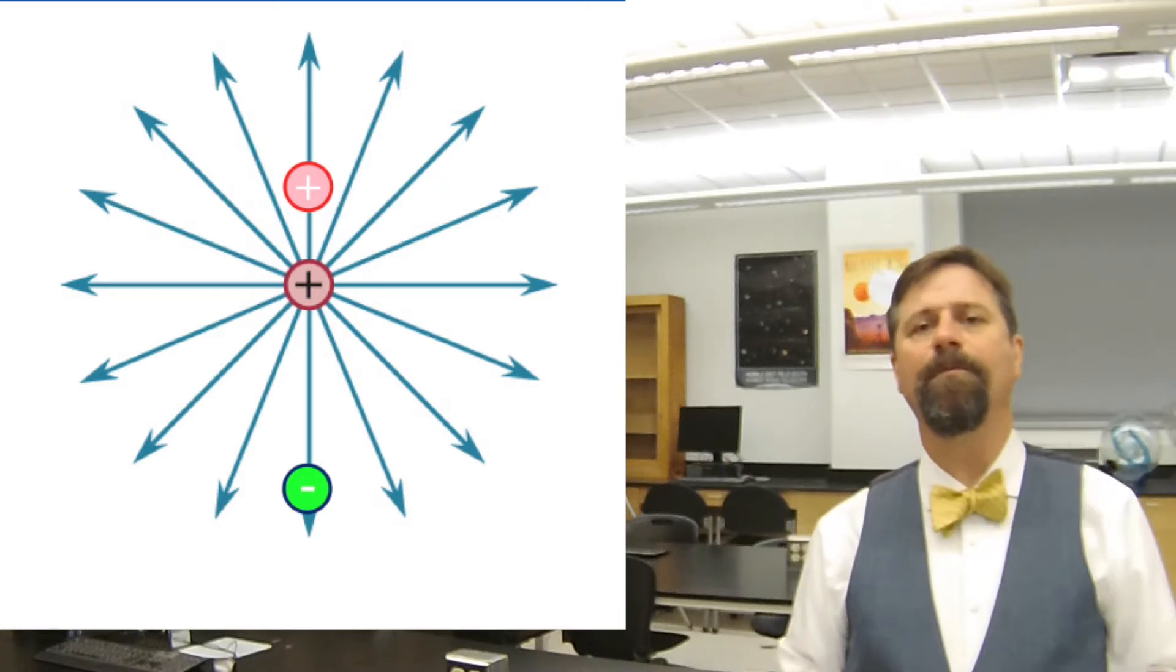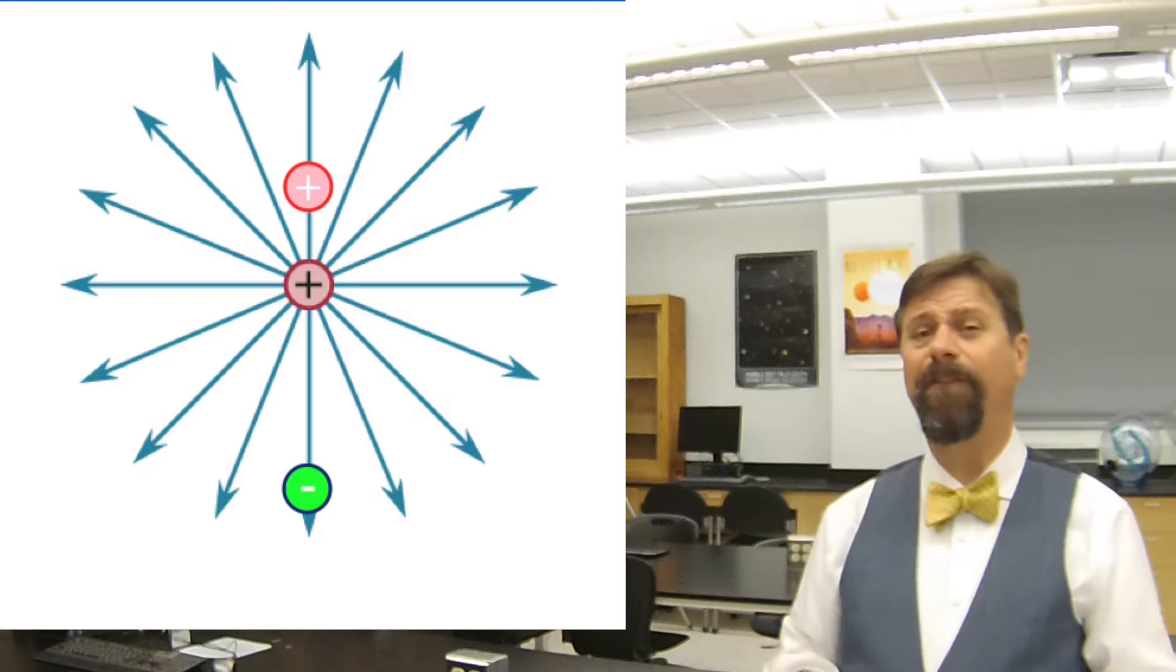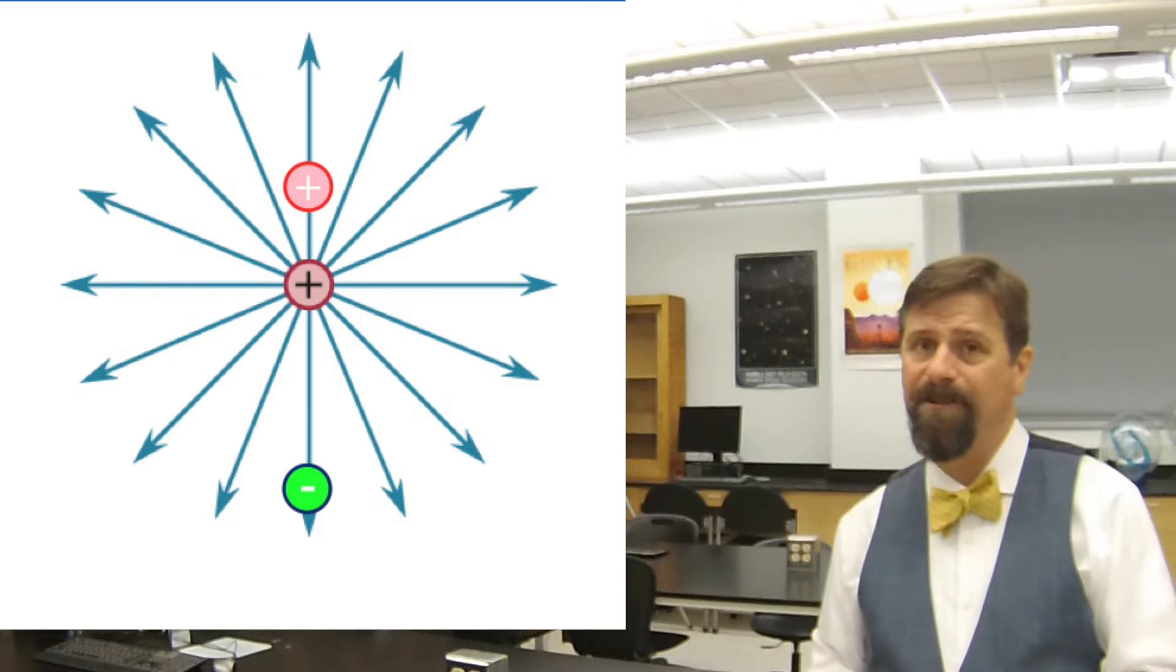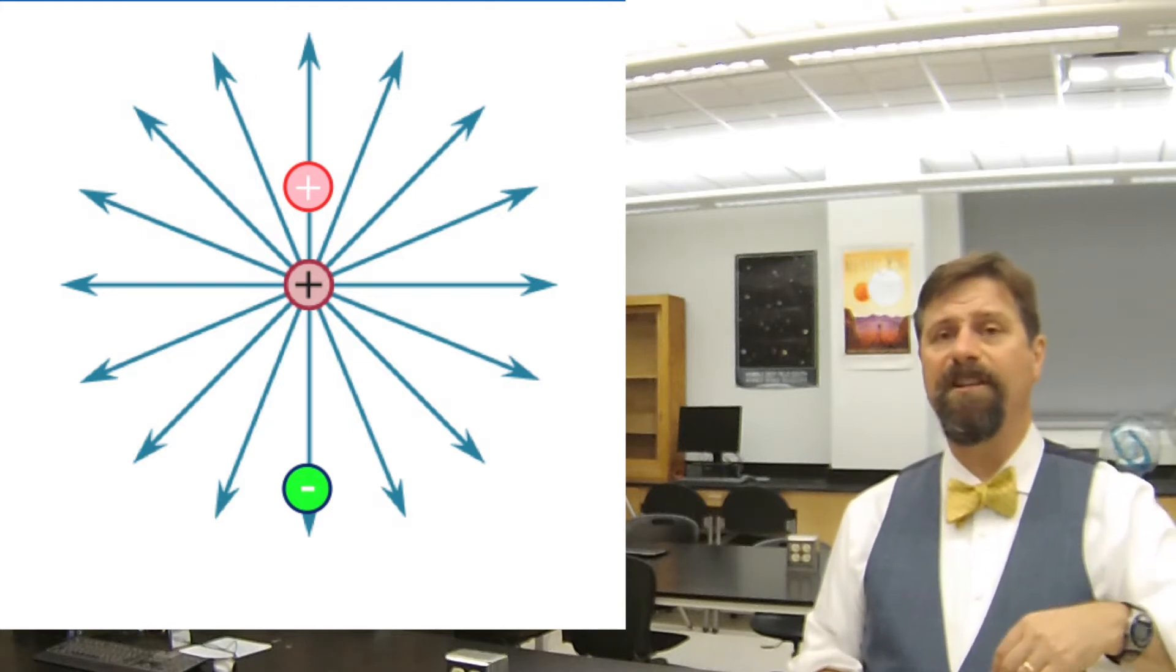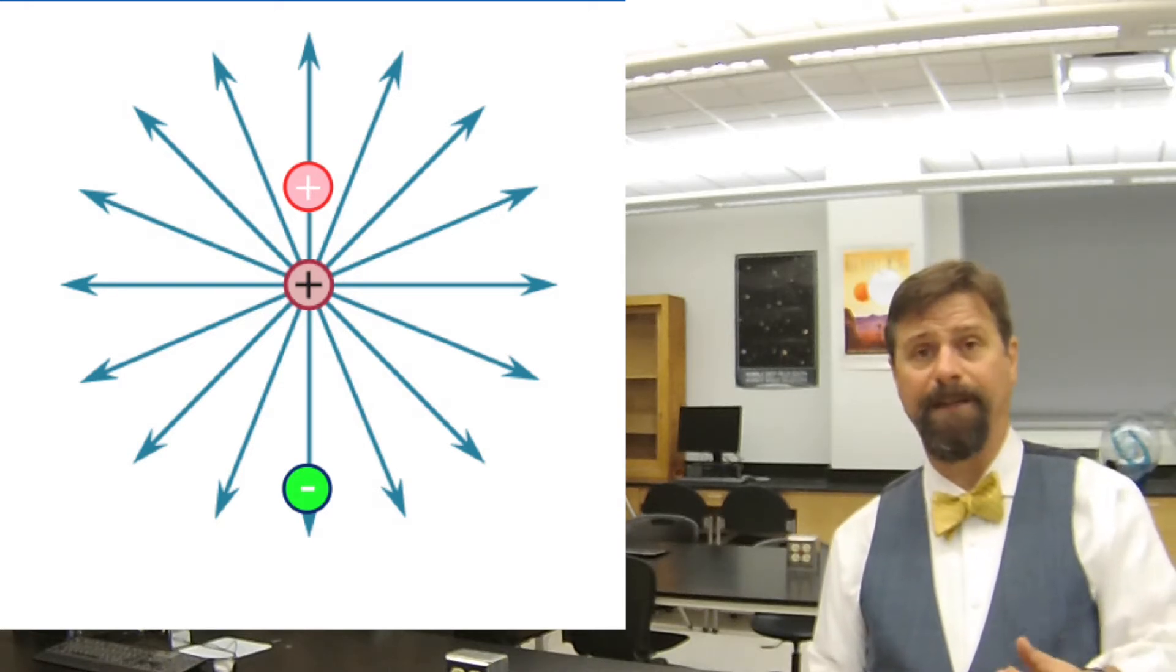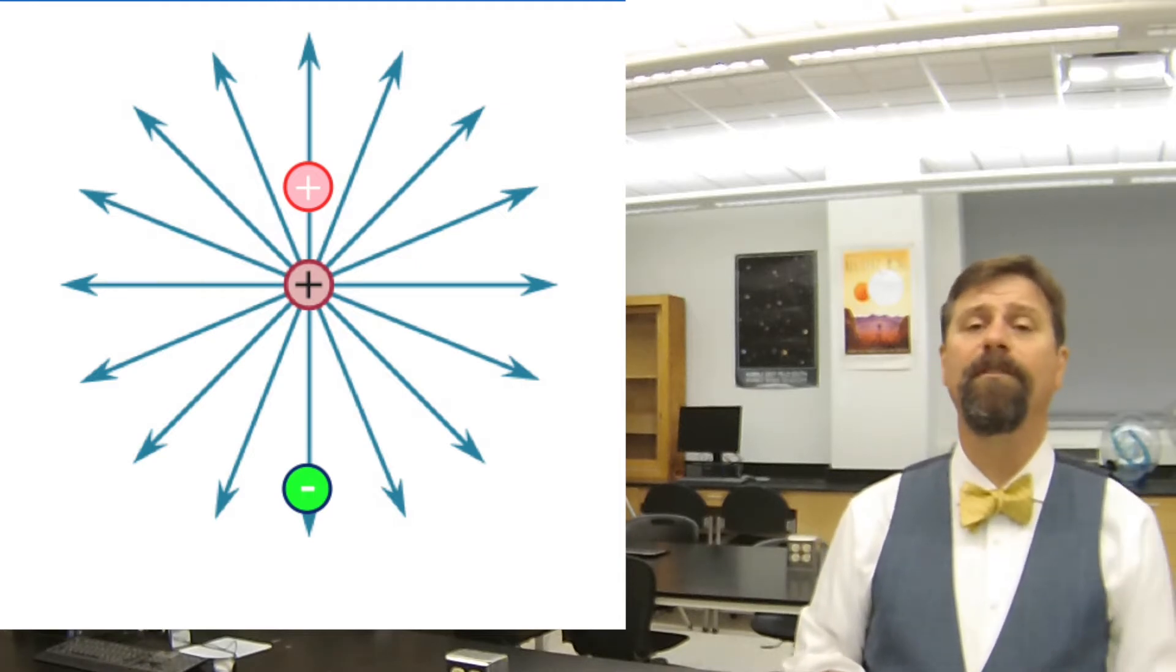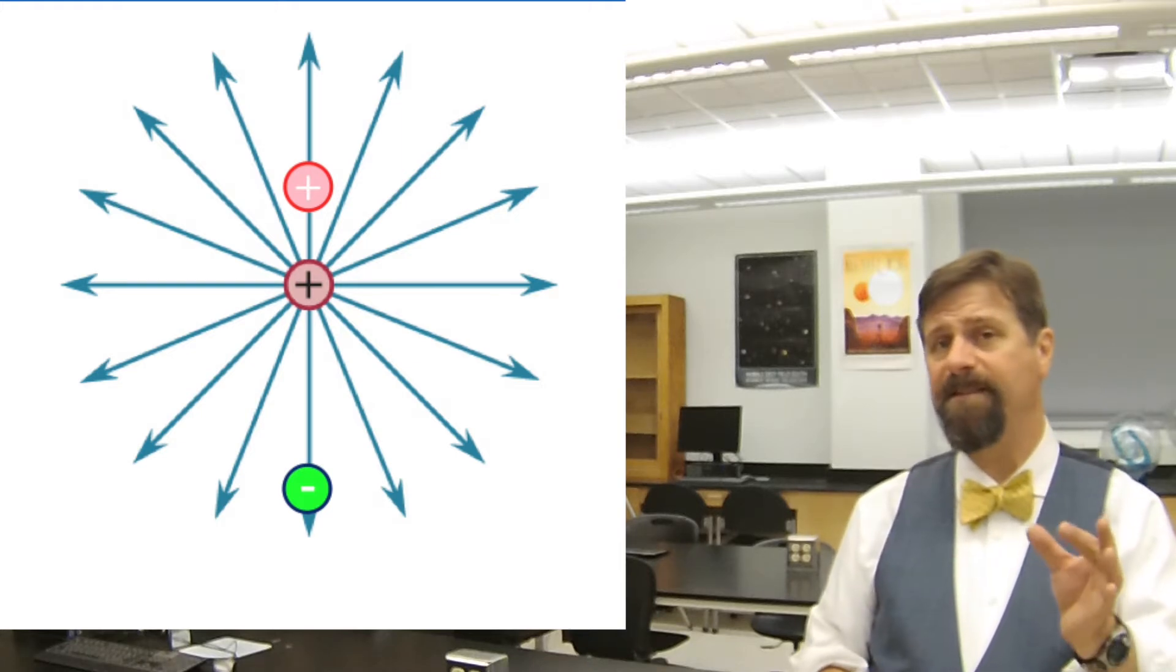We can place a test charge at the field line. If it's plus, it gets pushed away. If it's minus, it gets attracted towards it. So the field lines also determine the direction of motion that the test charge will go. From a plus charge, we can think of it as being outbound, and a minus charge, it can be considered inbound by convention.